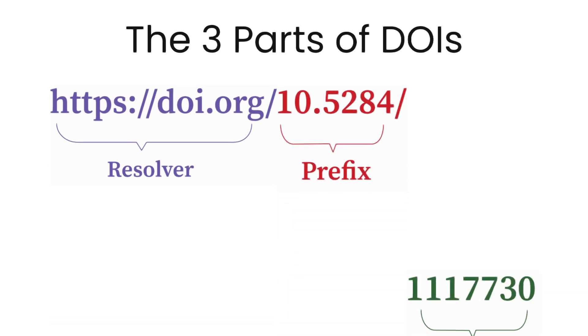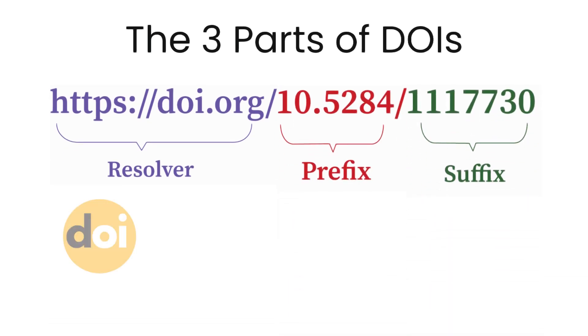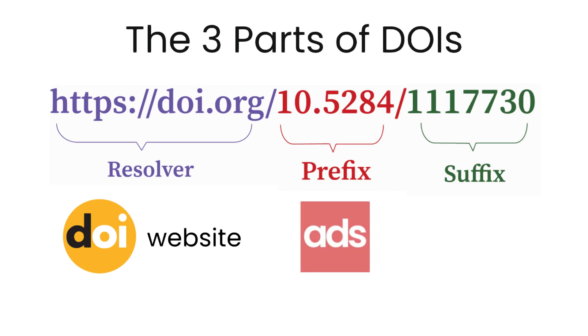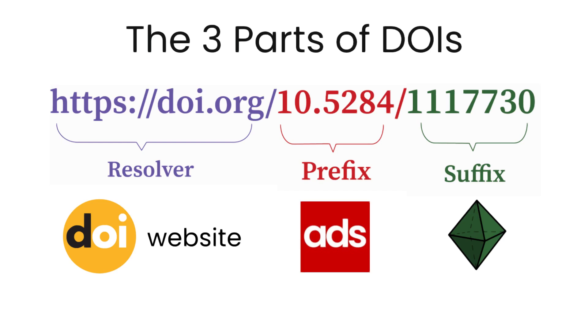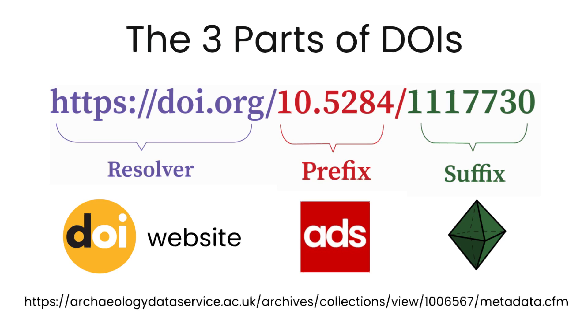So how does it work? Each DOI consists of three parts: a resolver, a prefix, and a suffix. The resolver connects the user to the web service that redirects them to the content, the prefix identifies the organization that the content is sourced from, and the suffix identifies the exact object you are trying to access, whether it be a journal article or a 3D model. Much shorter and easier to share than those lengthy URLs.